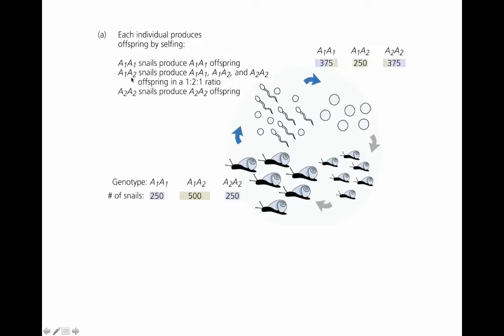If you think back to your Punnett squares, what's going to happen with the A1A2 heterozygotes? They're going to produce A1 homozygotes, heterozygotes, and A2 homozygotes in a 1 to 2 to 1 ratio. You can do up that Punnett square and very easily convince yourself that this is true. And then again, A2A2 snails are going to produce only A2A2 offspring.